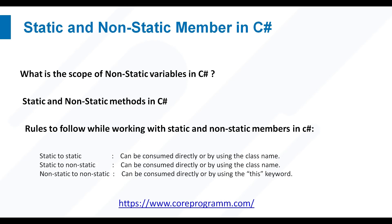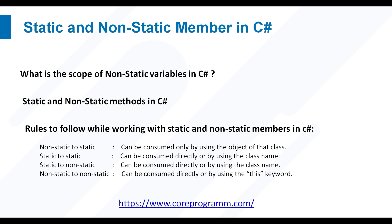Some rules to follow when working with static and non-static members in C#: non-static to static — can only be consumed using the object of that class. Static to static — can be consumed directly or by using the class name. Static to non-static — can be consumed directly or by using the class name. Non-static to non-static — can be consumed directly or by using the 'this' keyword.